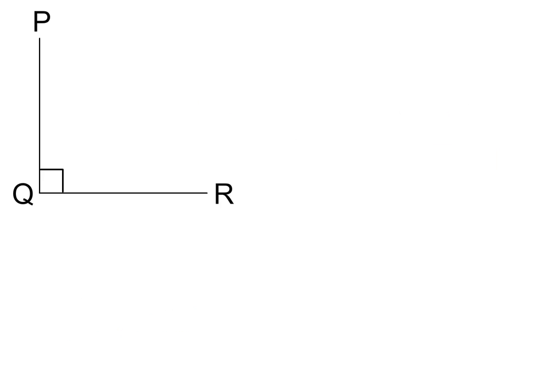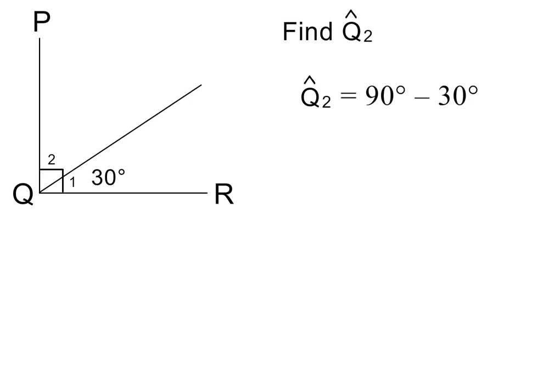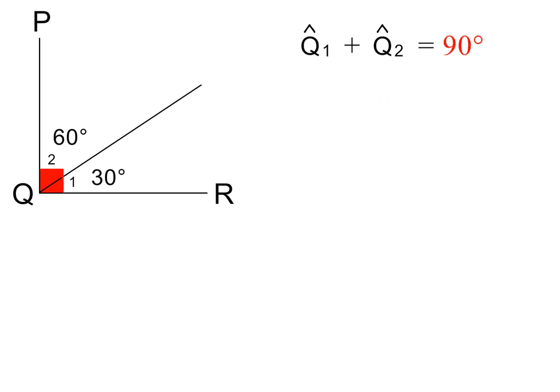Here we again have a right angle. If I now add a line to the sketch and I tell you that angle Q1 is 30 degrees, what will the size of angle Q2 be? It will be 90 degrees minus 30 degrees. Because we are told that the whole angle at Q is 90 degrees, angle Q2 is therefore equal to 60 degrees. This means that if we add these two angles, the answer will be 90 degrees.